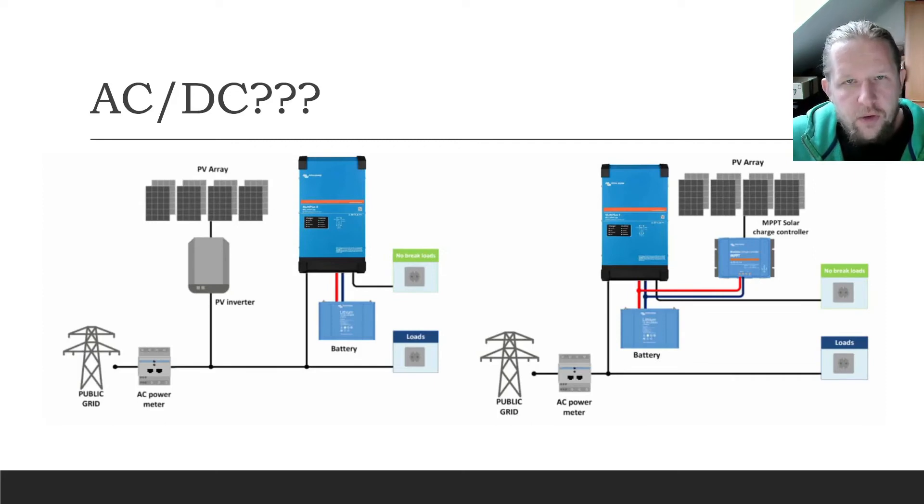So after a short introduction to the different parts of the system, I'll show you the difference what AC coupling and DC coupling means. AC coupling on the left side, you can see the public grid. You will see the AC power meter, that's the EM24 as I showed you before. And at the AC coupling, you can find a PV inverter, often attached here to the public grid side of the MultiPlus.